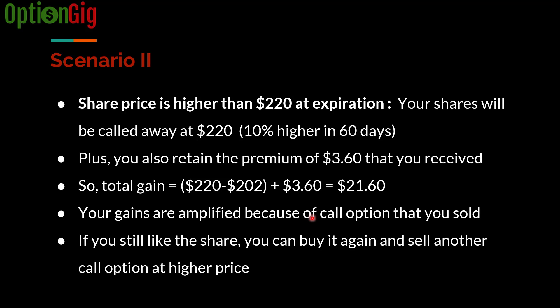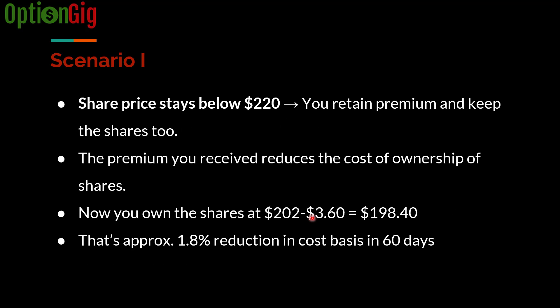You rinse and repeat this cycle and keep reducing your cost basis. For example, if Facebook stays in Scenario 1 and remains below $220, your cost of ownership has dropped to $198.40. You can then sell another covered call based on where the stock is trading and where you'd be okay letting the shares go. After the second trade expires, if you still hold the stock, sell another covered call — and by doing multiple rounds, you keep reducing your cost of ownership.